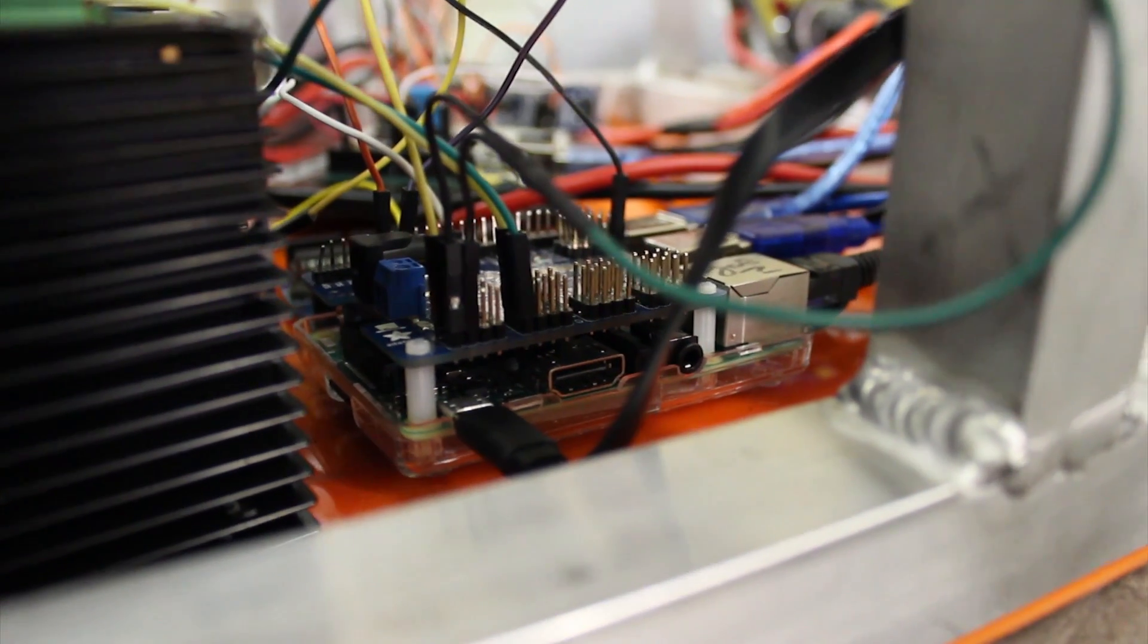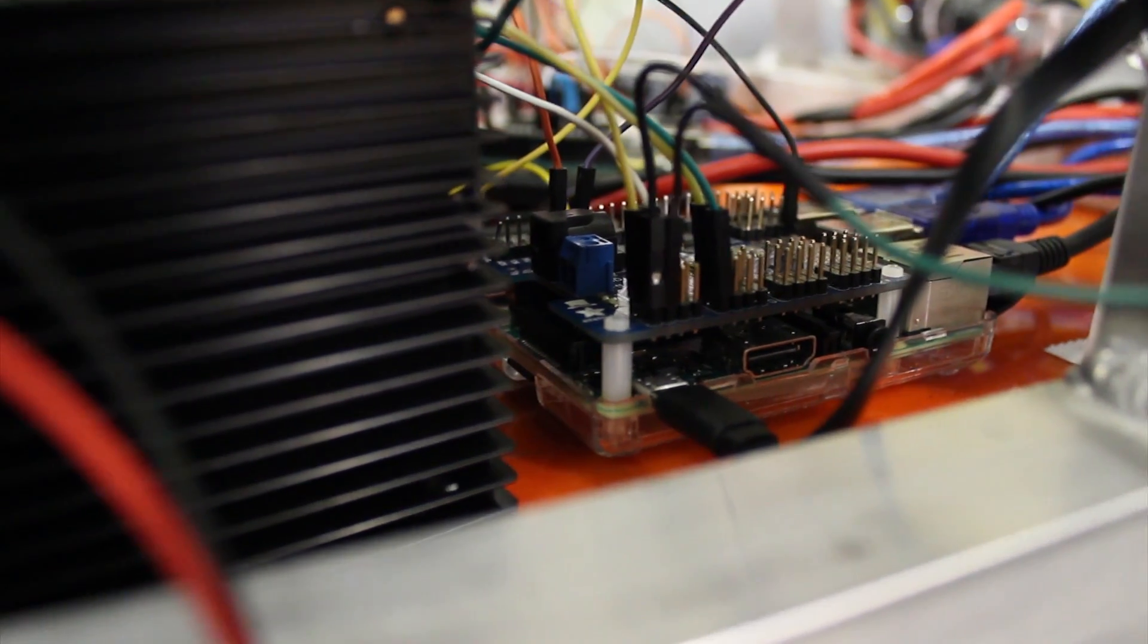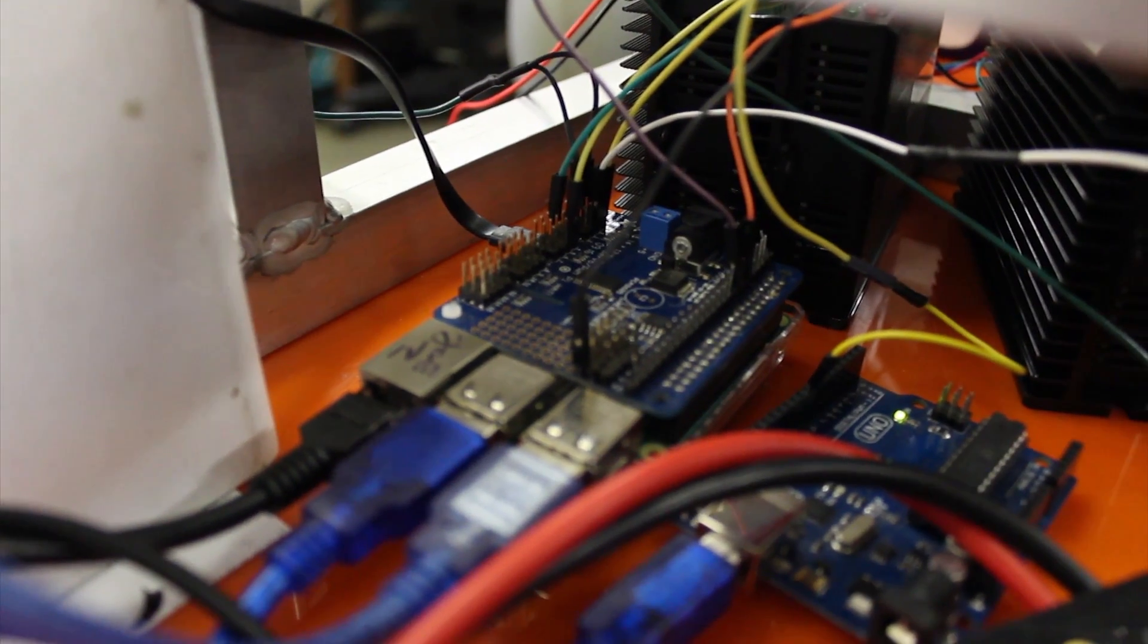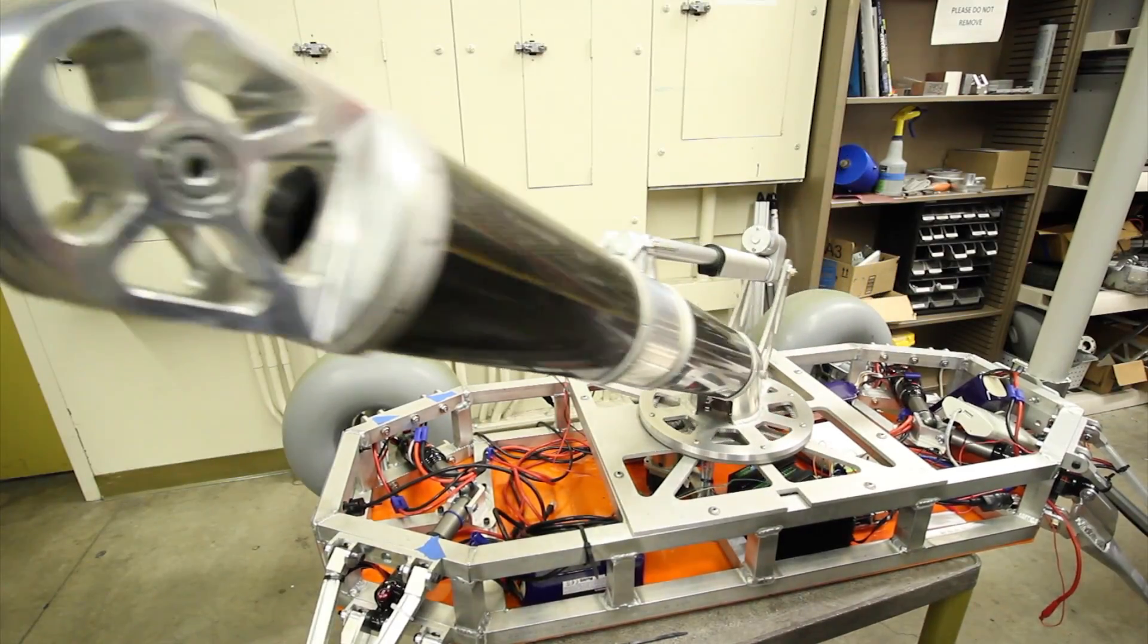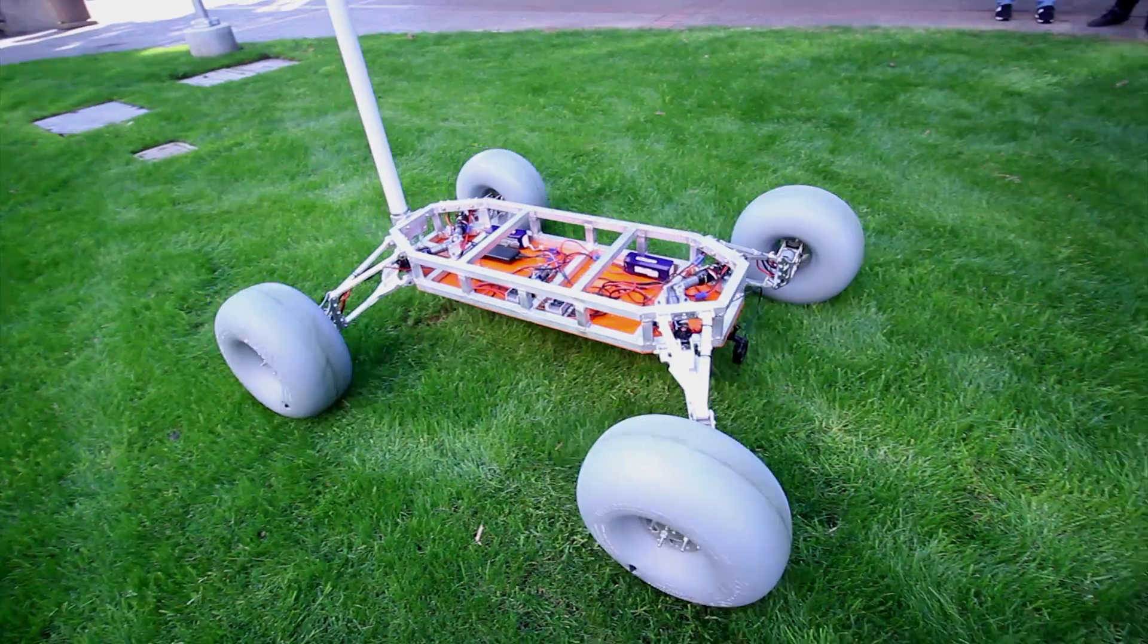For this year, we are taking a much more centralized approach to the rover's main control systems. We have opted to use a Raspberry Pi 3 that will act as the brains and central nervous system of the rover. This single Raspberry Pi will send movement commands to the arm and mobility systems while also receiving critical systems feedback and science data from the science cache.